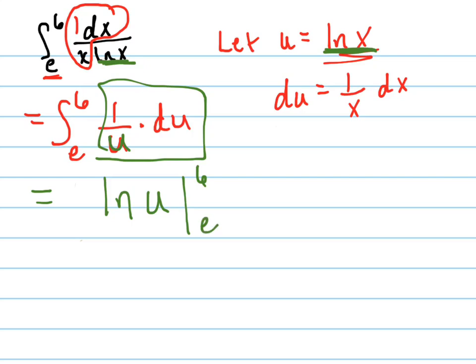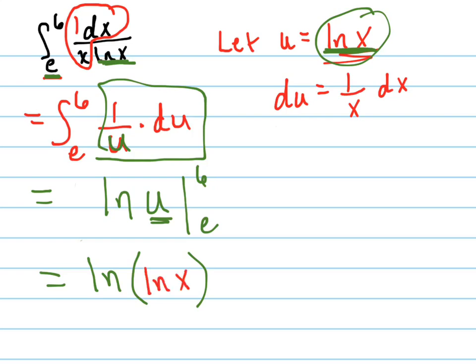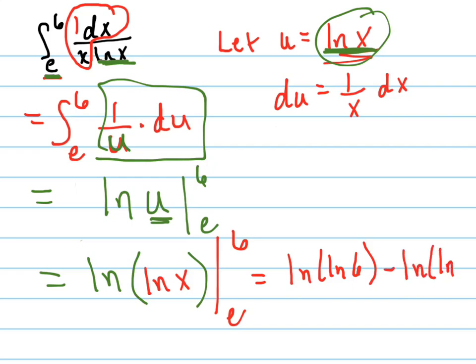That little trick here — that 6 and that e were relating to the x, so I don't plug these in until I substitute back in. This equals the natural log of... now I'm substituting u back in, so it's the natural log of the natural log of x, from e to 6. Which equals the natural log of the natural log of 6, minus the natural log of the natural log of e.